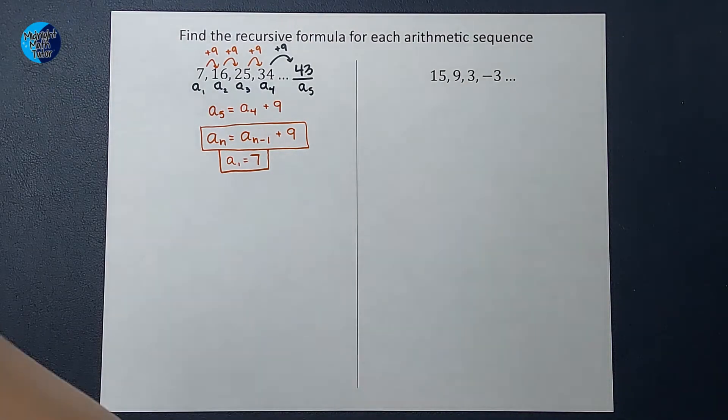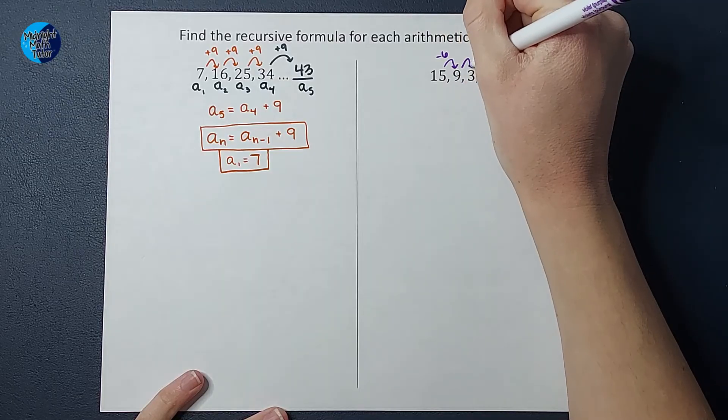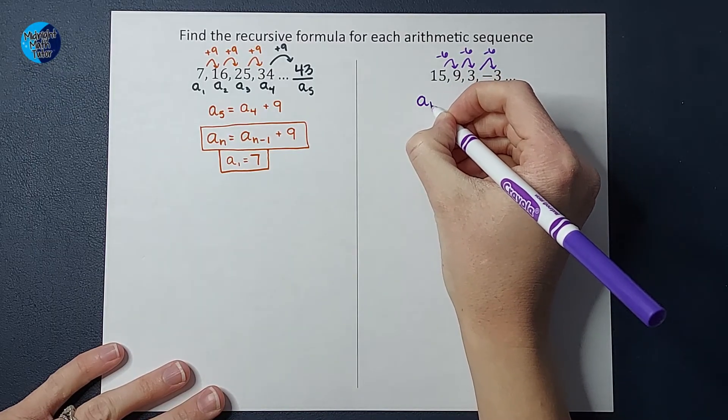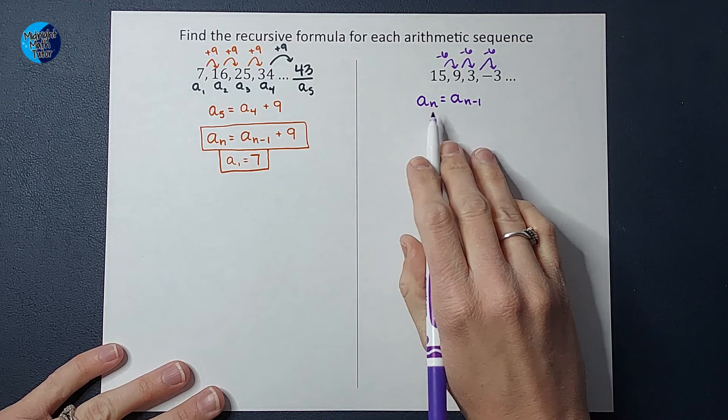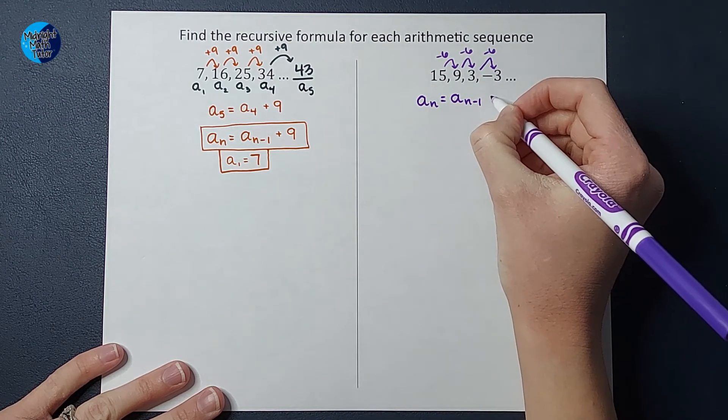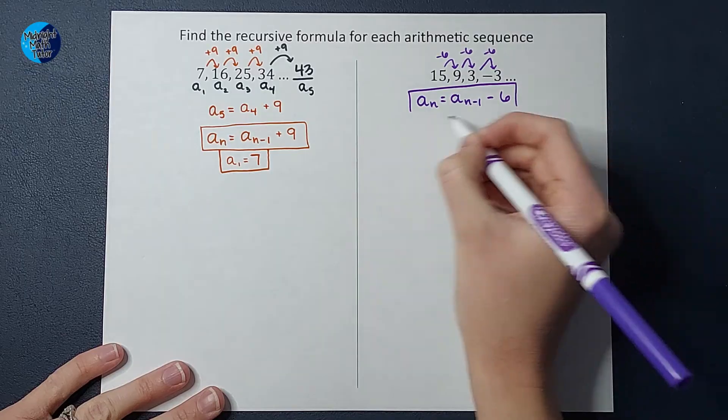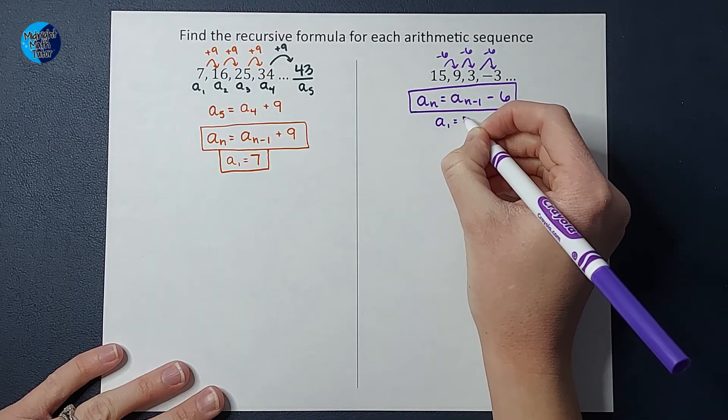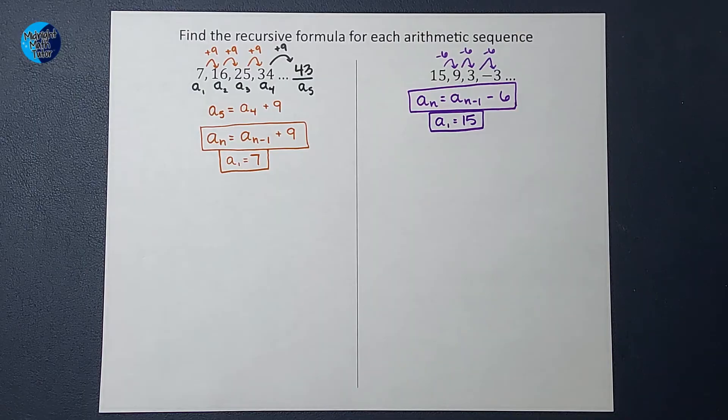Let's do one more. So this one, what are we doing each time? We're subtracting six each time. So if I wanted to tell someone how to find it, I'd say: whatever number you want to find, take the one before it, N minus one. If you want the tenth, take the ninth, and we subtract six. That is our recursive formula. And for it to be helpful, they need to know the first term is 15. I hope this was helpful. If you need more videos, I'll link that playlist. Thanks.